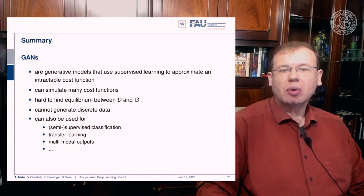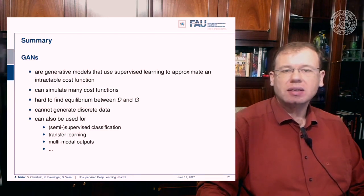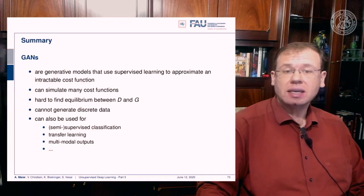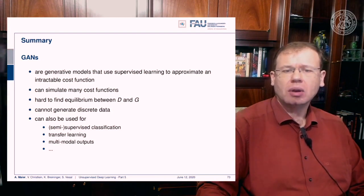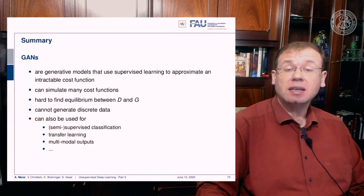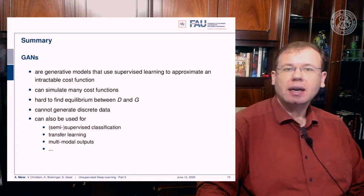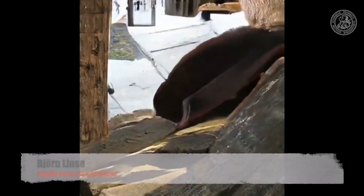To summarize: GANs are generative models that use supervised learning to approximate an intractable cost function. You can simulate many different cost functions, though it's hard to find an equilibrium between the discriminator and generator. GANs cannot generate discrete data, but can be used for semi-supervised classification, transfer learning, multimodal outputs, and domain transfer. There are also papers like BigGAN that produce highly resolved images.